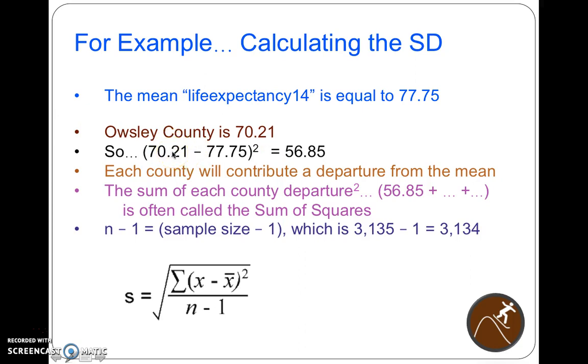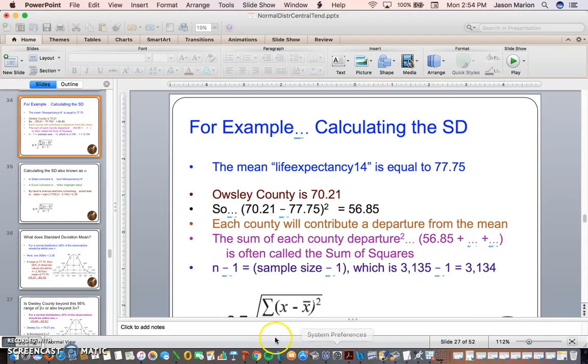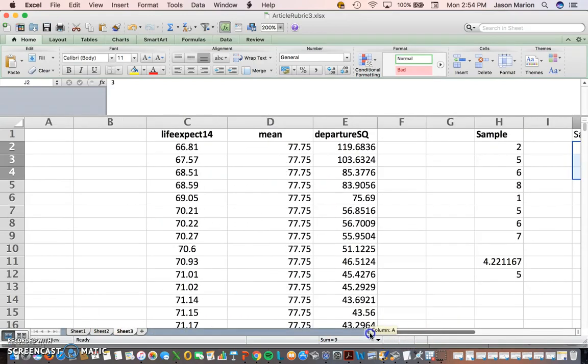So it's about 7.5-ish or so, 7.54 squared. So 7 times 7 is 49, 7.5-ish times 7.5-ish gives us 56.85. So that county contributes 56.85 as a squared value. The sum of each county's departure is added, and this is called the sum of squares. So N-1 down here is the sample size minus 1, which is easy to get, 3,135 minus 1, which is 3,134. So there are ways of getting this very easily in Stata and Microsoft Excel. So I'm just going to show you in Microsoft Excel how it's done manually, and then I'm going to share the really easy way. I'm going to share the manual way, just because I think it's important to see, in the big scheme of things, how it's done.